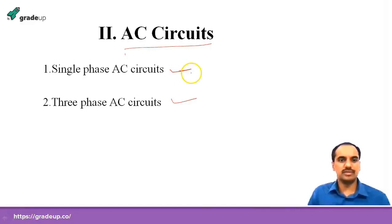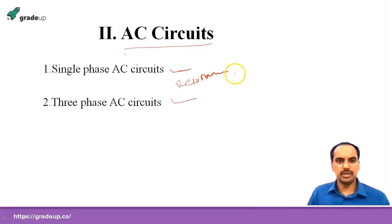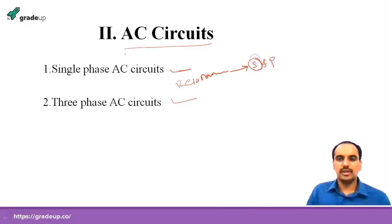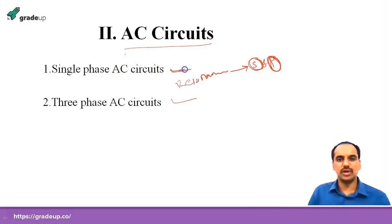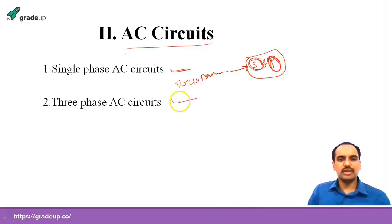After covering series and parallel single-phase AC circuits, the next important area is resonance — which is the most important topic in AC Circuits. We need to study series resonance and parallel resonance, covering bandwidth, quality factor, and resonant frequency formulas. In single-phase AC circuits, most questions are asked on resonance, especially series and parallel resonance. This is a must-study area.